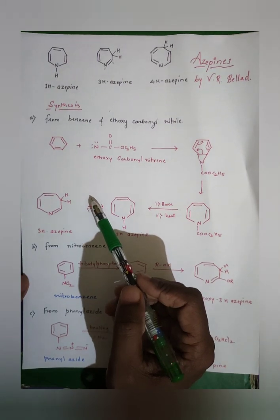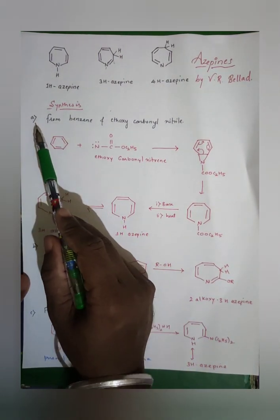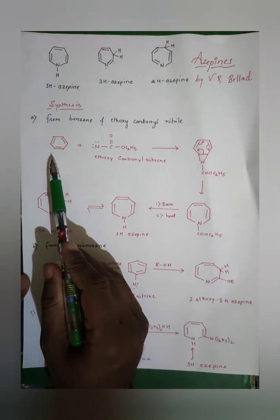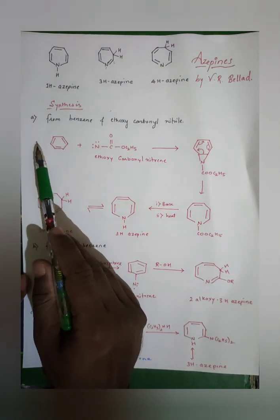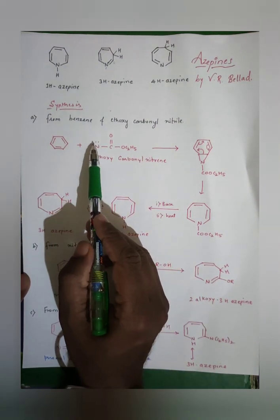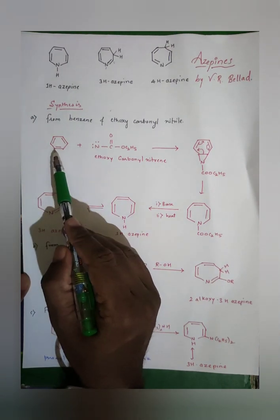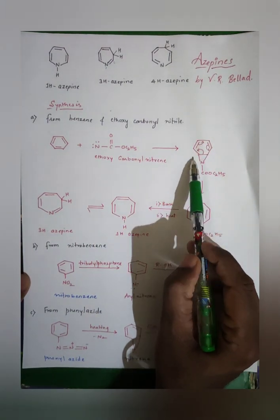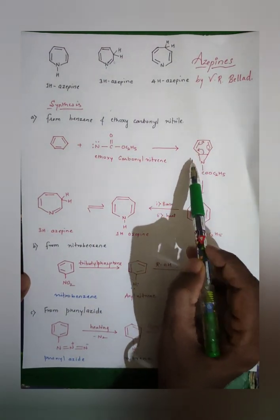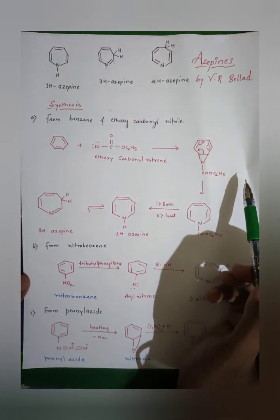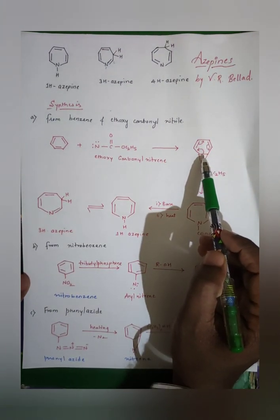The first synthesis is from benzene and ethoxycarbonyl nitrene. A nitrene insertion reaction takes place — nitrene is an intermediate. What we get is a structure where the nitrene is inserted into the benzene ring.